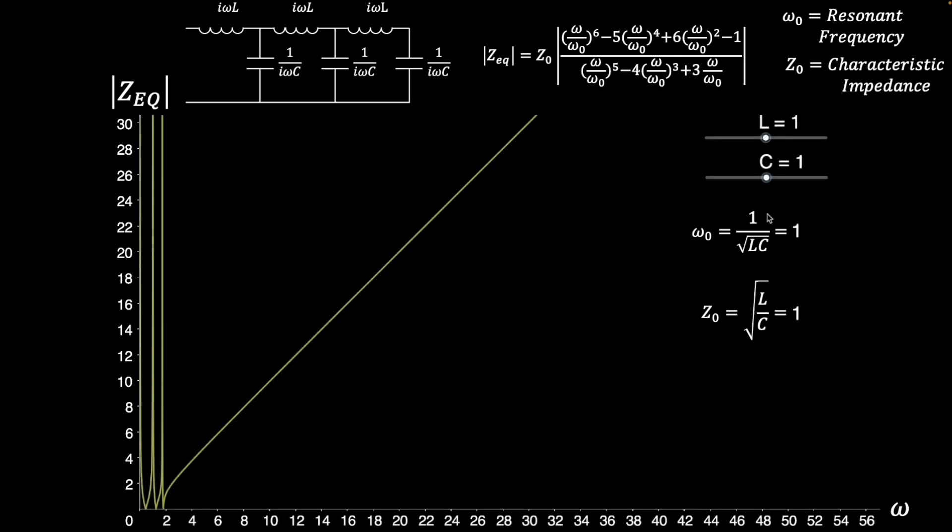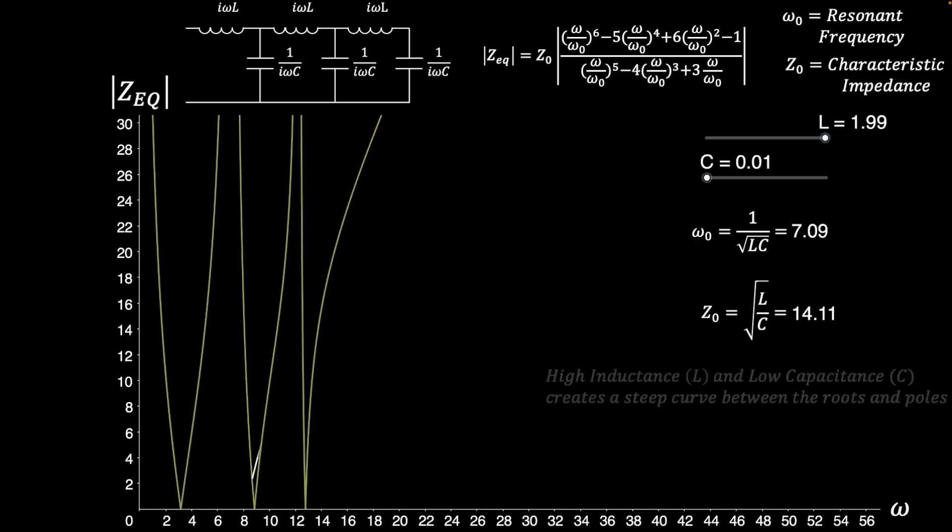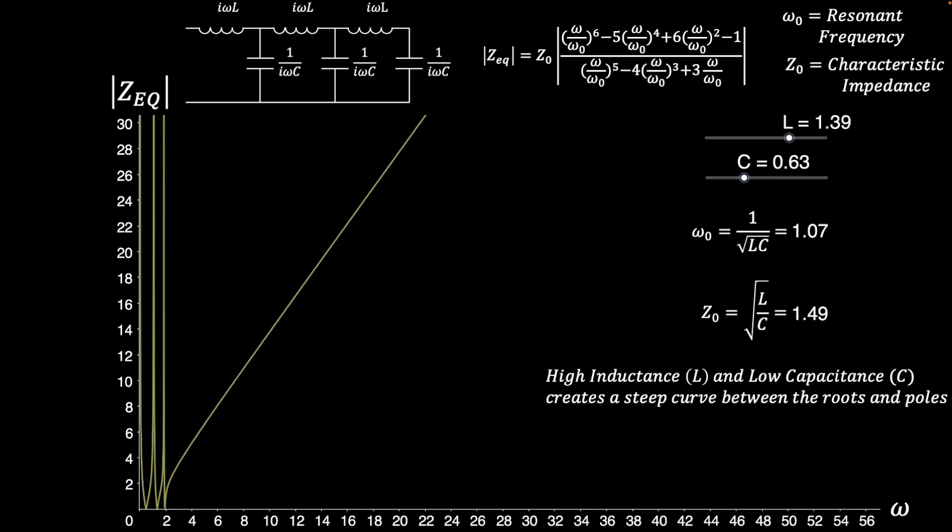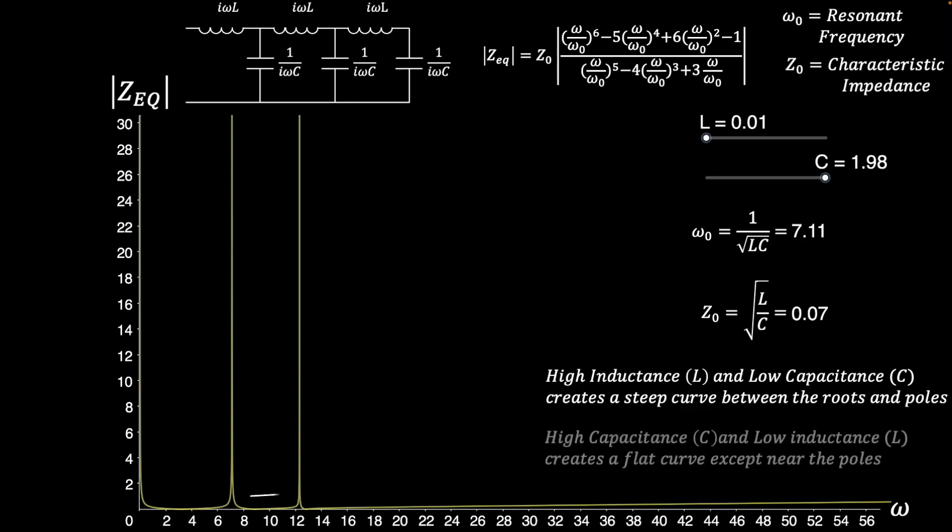Now, I'll shift the inductance and capacitance values in opposite directions. Note that when the inductance is high and the capacitance is low, the curve rises steeply between the roots and poles. When the capacitance is high but the inductance is low, the curve is very flat between the poles. These last four scenes show all the ways to vary L and C relative to each other, and I think this is a good place to stop.